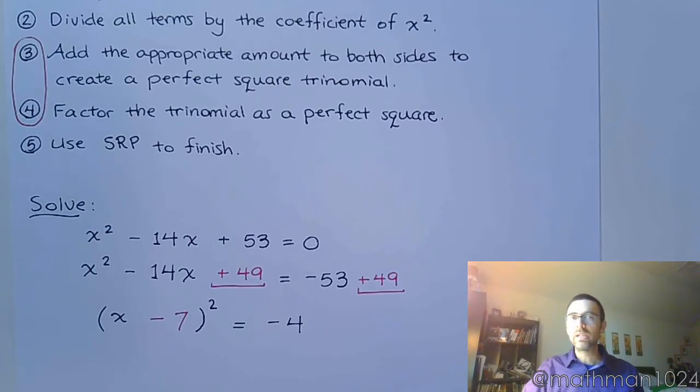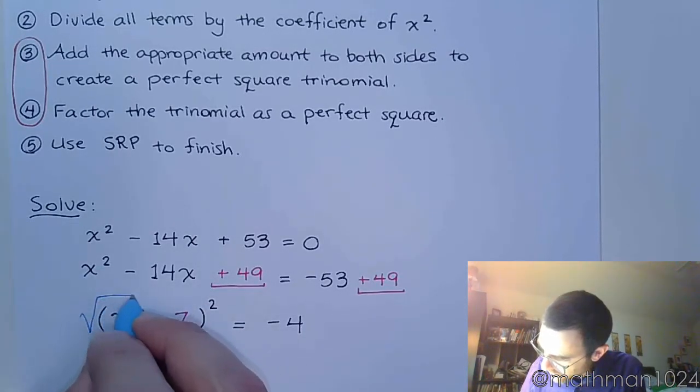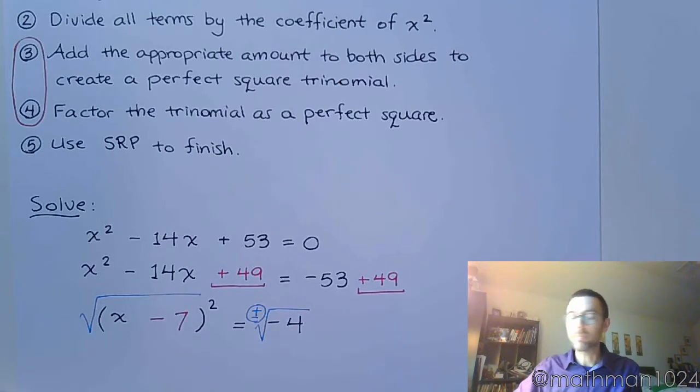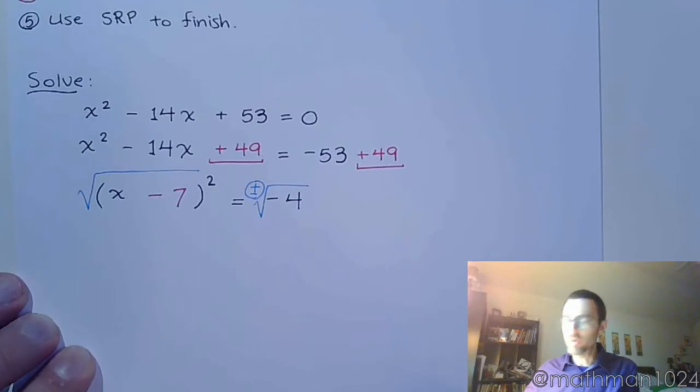Alright, well now this is just a simple application of using the square root property. So, take the square root of both sides. Don't forget the plus or minus. So, we factored and we're using the square root property to finish.